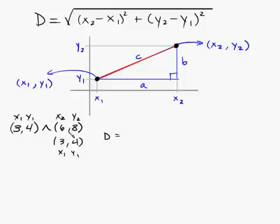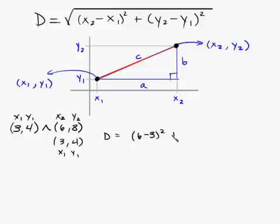So d is equal to the square root of (x2 minus x1) quantity squared plus (y2 minus y1) quantity squared. That gives us (6 minus 3) quantity squared plus (8 minus 4) quantity squared, all under the square root.